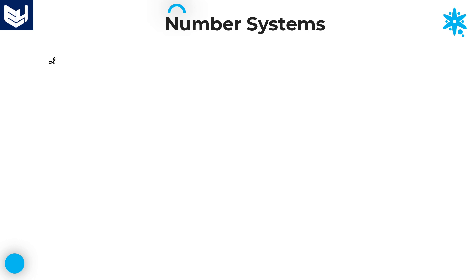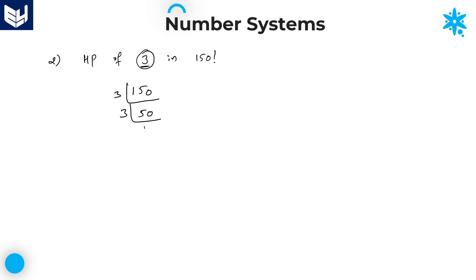Second problem: find the highest power of 3 in 150 factorial. Divide the given number 150 by the prime number 3. First, you need to check that the number is prime. Here, 3 is a prime number, so you can divide 150 directly by 3: 50 times. Again divide by 3: 16 times (16 × 3 = 48, remainder 2). Again divide by 3: 5 times. Again divide by 3: 1 time. We only want the quotient values, not the remainders. All these values are quotient values.